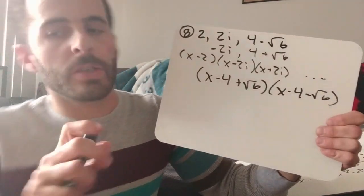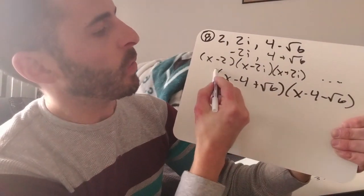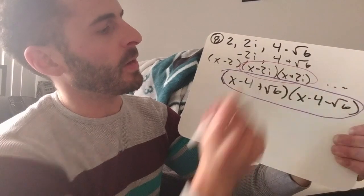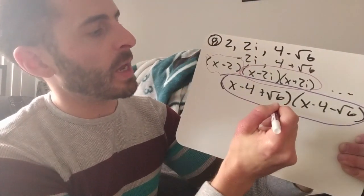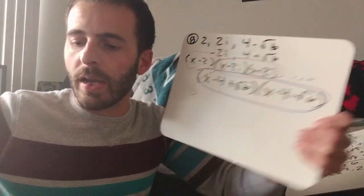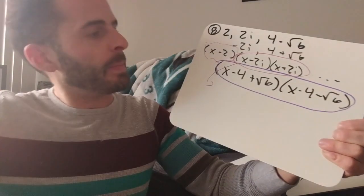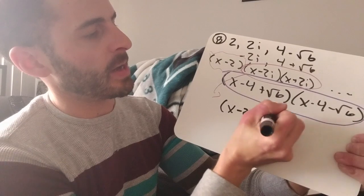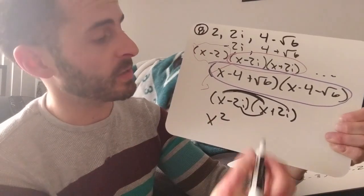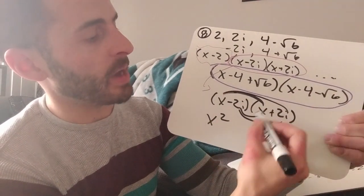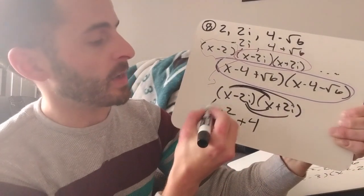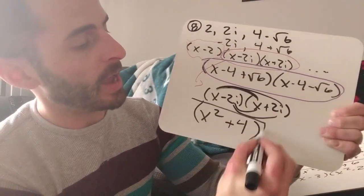Now we want to break these up and multiply the conjugate pairs together. I'm going to start with (x minus 2i) and (x plus 2i). I get x squared plus 2ix minus 2ix — those cancel out. Then negative 2i times positive 2i: negative times positive is negative, i squared is negative, so negative times negative is positive, and 2 times 2 is 4. So I have x squared plus 4. Wait — actually x squared minus 4. I need to save that for later.